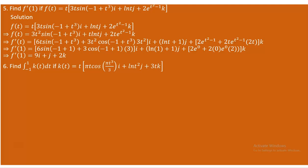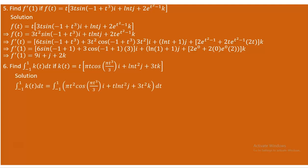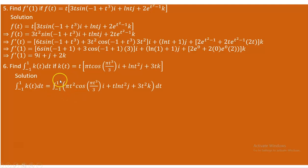Question number 6: find the integral from −1 to 1 of k of t dt, where k of t is given. This is about integration of a vector value function. You have to integrate each component from −1 to 1. Multiplying everything by t gives: πt² cos(πt³/3)i plus t ln(t²)j plus 3t² k. We integrate the x component, the y component, and the z component separately.